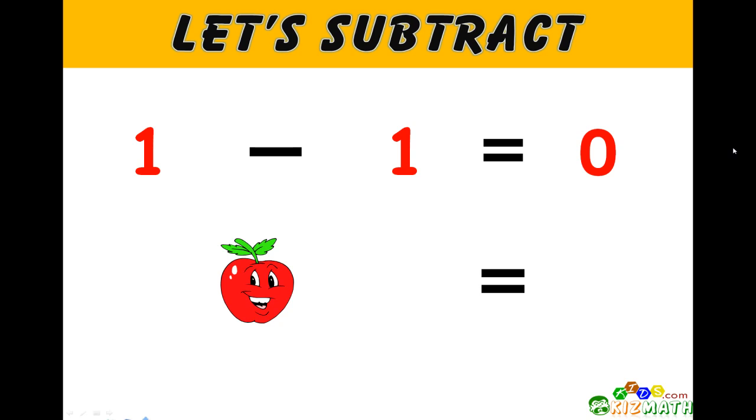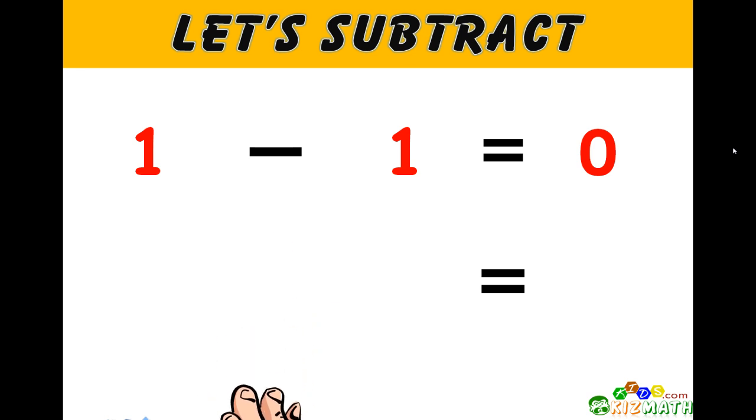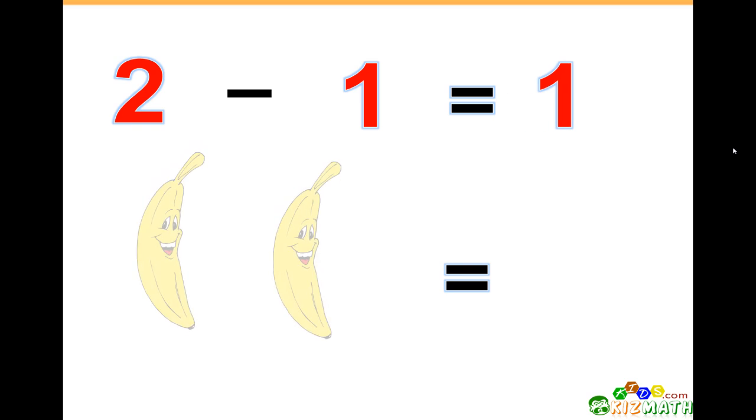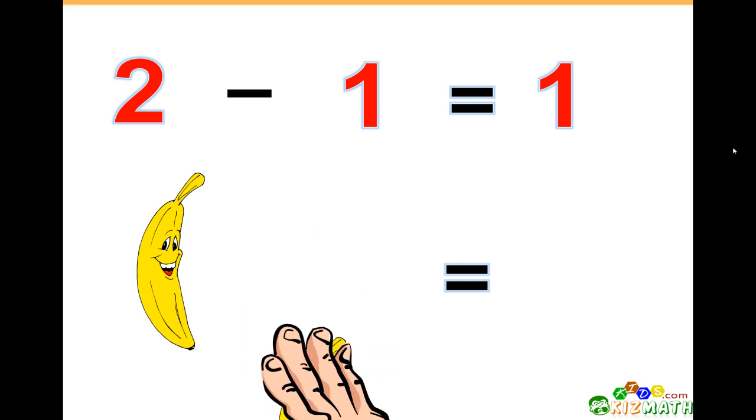Let's subtract. 1 minus 1 equals 0. If we have one apple and we take away that one apple, we have zero apples left. 2 minus 1 equals 1. If we have two bananas and we take away one banana,